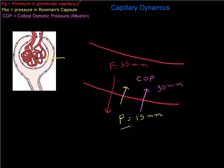So those are the three pressures that operate in the system. The pressure in Bowman's capsule cannot really be changed in a normal nephron — that pressure is constant. The colloid osmotic pressure due to albumin is also constant and can't really be changed. So the one pressure that can be changed is the hydrostatic pressure inside the glomerular capillary.